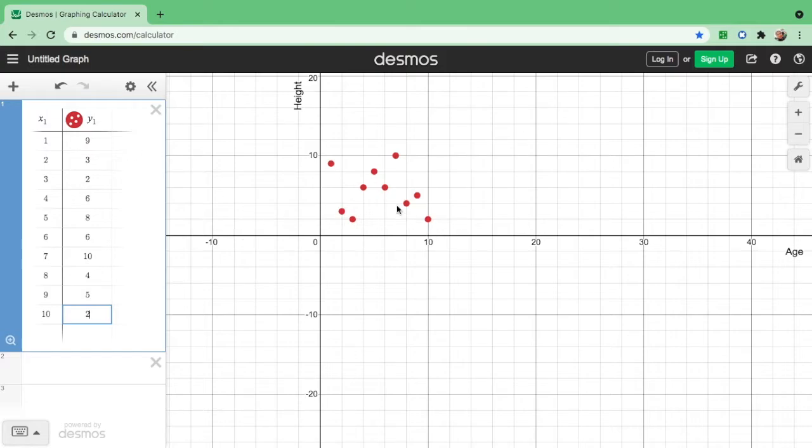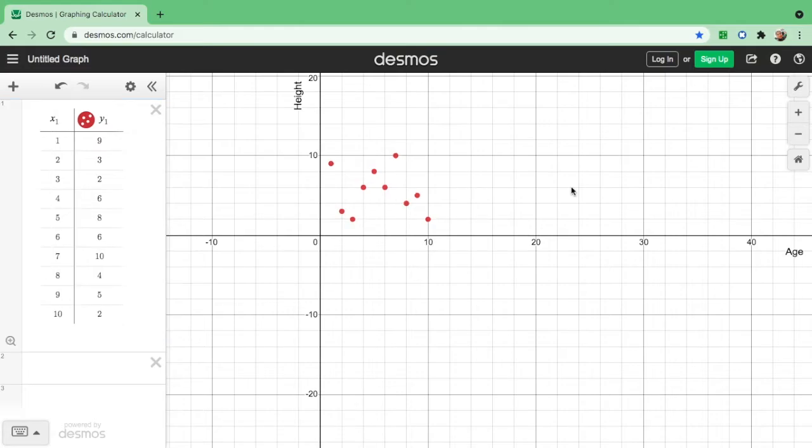So as you can see, the scatter plot is showing on your screen. Now, you can actually adjust the interval if you want to see the graph visibly. So just click the graph setting.